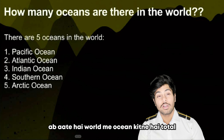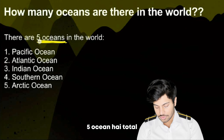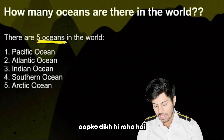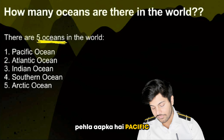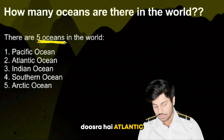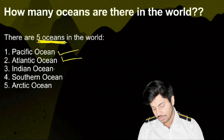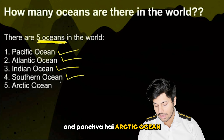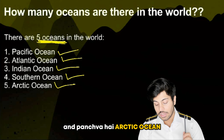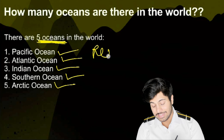Now, how many oceans are in the world? There are 5 Oceans. You can see them: 1. Pacific Ocean, 2. Atlantic, 3. Indian Ocean, 4. Southern Ocean, 5. Arctic Ocean.